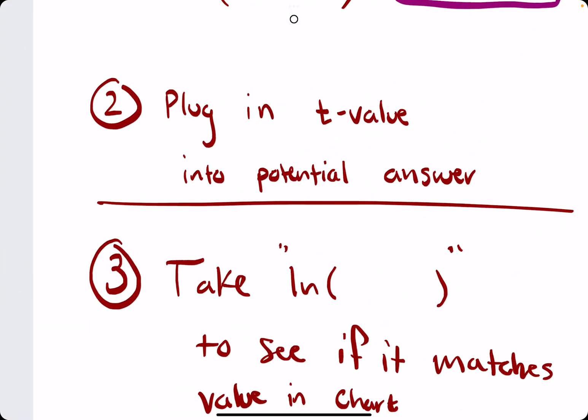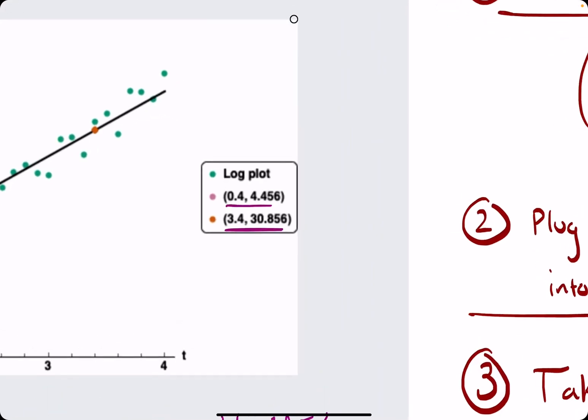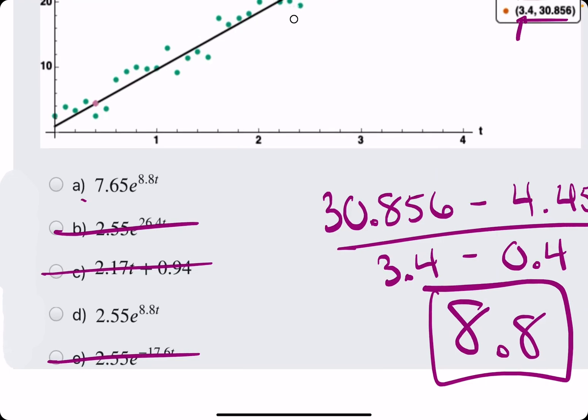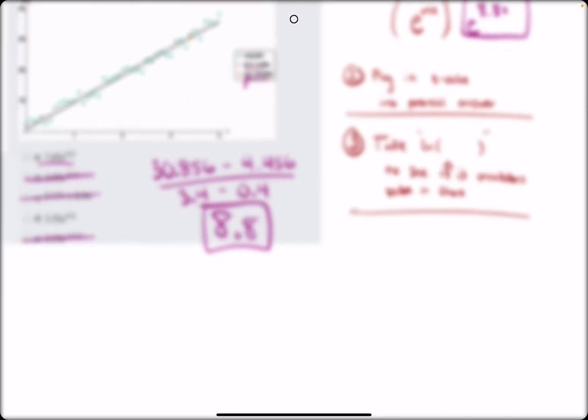So now we will plug in a t value, say, let's plug in 3.4. It should be one of these, and I will choose 3.4. So we're going to plug in 3.4 into one of these potential answers. So I'll just plug it into option A.